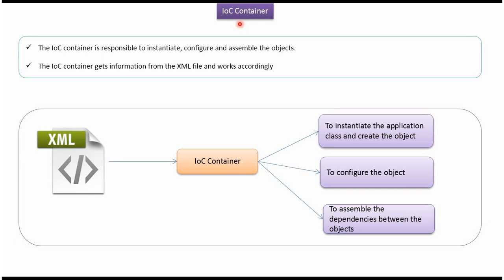In this video tutorial I will cover IOC container. IOC container is responsible for instantiating the objects, configuring the objects, and assembling the objects. What objects to instantiate, how to configure, and what objects to assemble — that information will be in the XML file. IOC container will read this XML file and based on that, it will instantiate, configure, and assemble the objects.